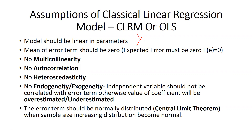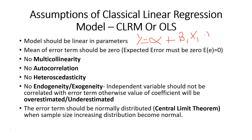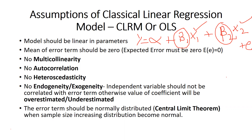Let me clarify. Consider this equation: y = α + β1·x1 + β2·x2 + error term. Here, α, β1, and β2 are known as our parameters, while x1 and x2 are variables — these are our independent variables.